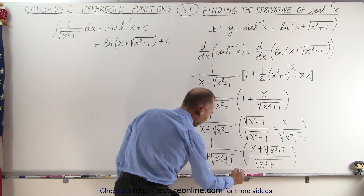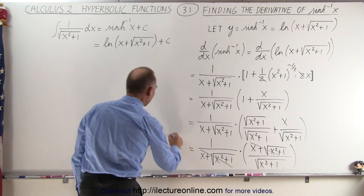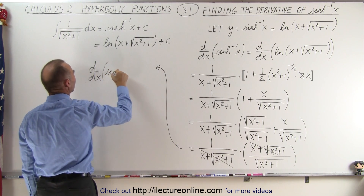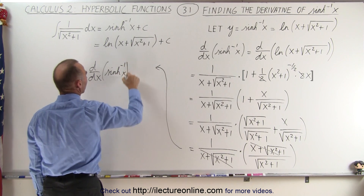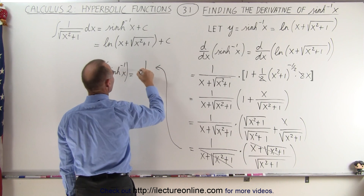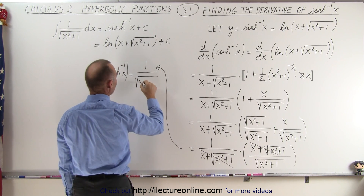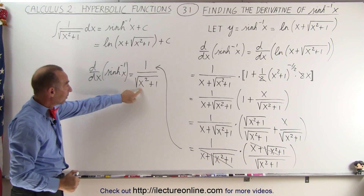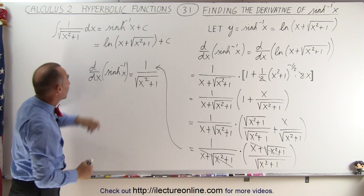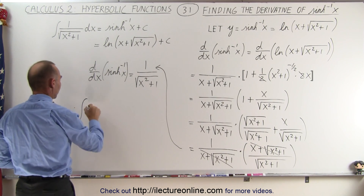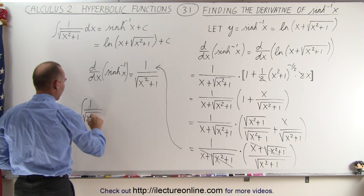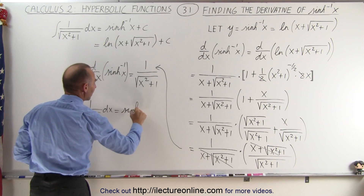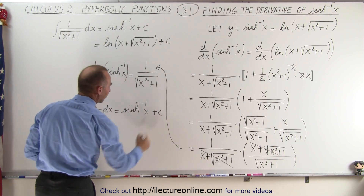Now you realize that the x plus the square root of x squared plus 1 in the numerator cancels with the same expression in the denominator. You can then see that the derivative with respect to x of the inverse hyperbolic sine of x is indeed equal to 1 divided by the square root of x squared plus 1. Therefore, the integral of 1 over the square root of x squared plus 1 dx must be equal to the inverse hyperbolic sine of x plus a constant of integration.